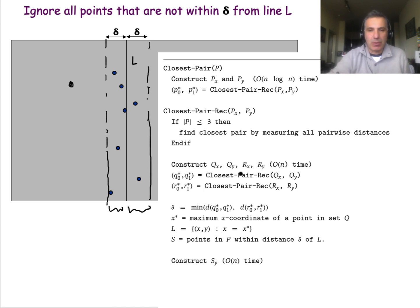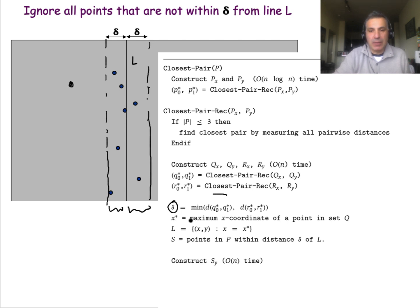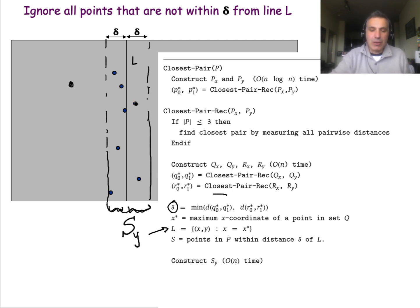Let's go back to write some more code based on what we discussed. Earlier we had written the two recursive calls. Now we first compute the delta parameter — the minimum of the two distances from the solutions in Q and R. We found the rightmost point in Q, giving us x-coordinate x-star, so the vertical line L is where x equals x-star. We found all points S within distance delta from that line, and sorted them by y-coordinate to get the Sy list in linear time.